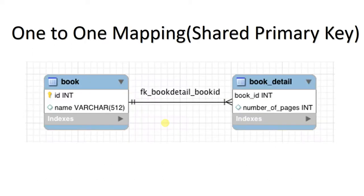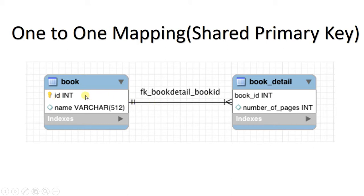We start with one-to-one mapping, which has two concepts: using a shared primary key and using a foreign key. In shared primary key, consider a table called 'book' with id and name, and another table called 'book_detail'. The id in 'book' acts as a reference to book_detail, but the id in book is named 'id' while in book_detail it is named 'book_id'. Since they have different names but share the primary key relationship, this is the shared primary key concept. Book_detail holds book_id and the number of pages.